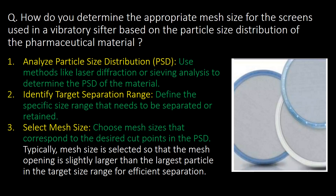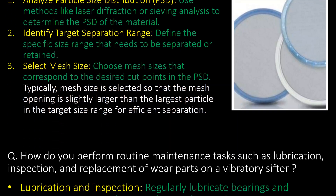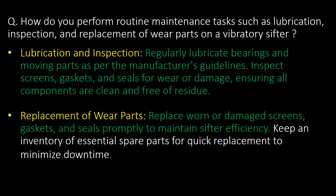How do you determine the appropriate mesh size for screens used in a vibratory shifter based on particle size distribution of pharmaceutical material? Step 1: analyze particle size distribution (PSD). Step 2: identify the target separation range. Step 3: select mesh size — choose a mesh size that corresponds to the desired cut points in the PSD.